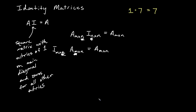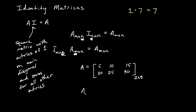Let's do some examples. If matrix A equals 5, 10, 15, 20, 25, 30 — two rows and three columns, so this is a 2 by 3 matrix — if I want to do A times I, then I'll need three rows in the identity to match the three columns of A. So my identity matrix here is going to be 3 by 3, with ones on the main diagonal and zeros everywhere else.